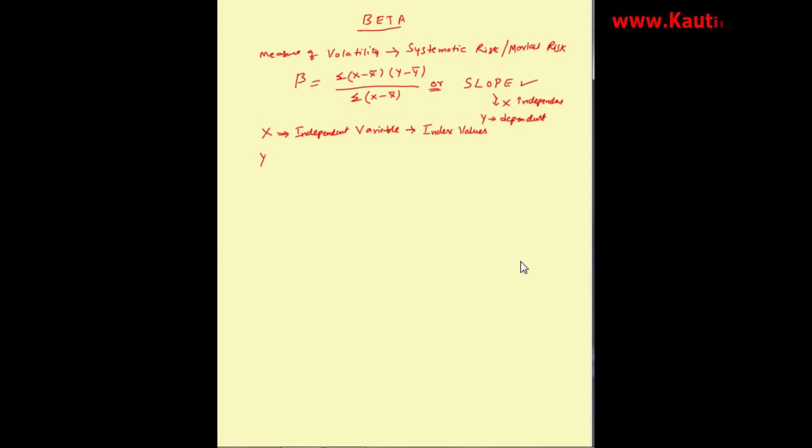Suppose you are taking stock markets, then your index values of NSE 50 or BSE 30, NASDAQ, or any index or sensex values will be considered as the independent variable. Y is your dependent variable, that is, the stock for which you are calculating the beta.